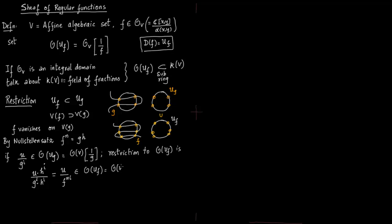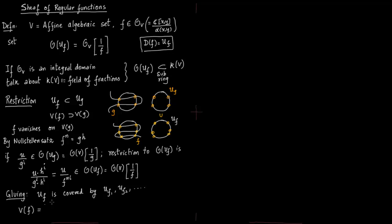You could write some other letter for the numerator, but the important part is that the denominator is now in terms of F. So you were able to go from the open set U_G restricted to U_F and keep the definition intact — the denominator is in terms of the function defining U_F. Now we will talk about the gluing condition. Say U_F is covered by a bunch of other open sets, and the vanishing set of F is the intersection of the vanishing sets of F_1, F_2, and so on.